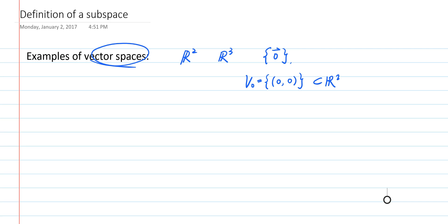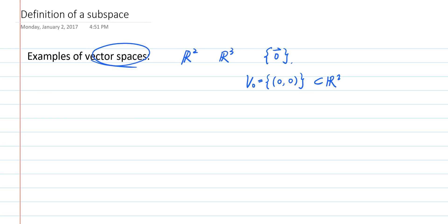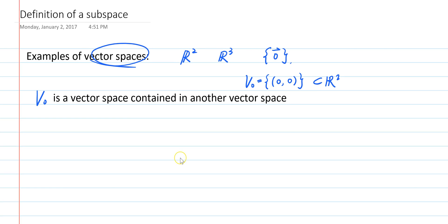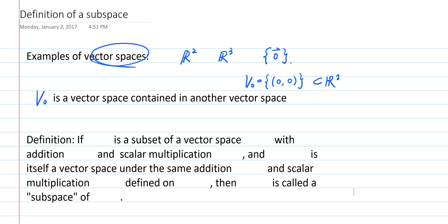From now on, I'm going to assume that you know about the notation and the concept of a subset. So the set V0 is a subset of R2, but at the same time V0 is itself a vector space. Therefore, V0 is a vector space contained in another vector space. This motivates us to define a concept called subspace.